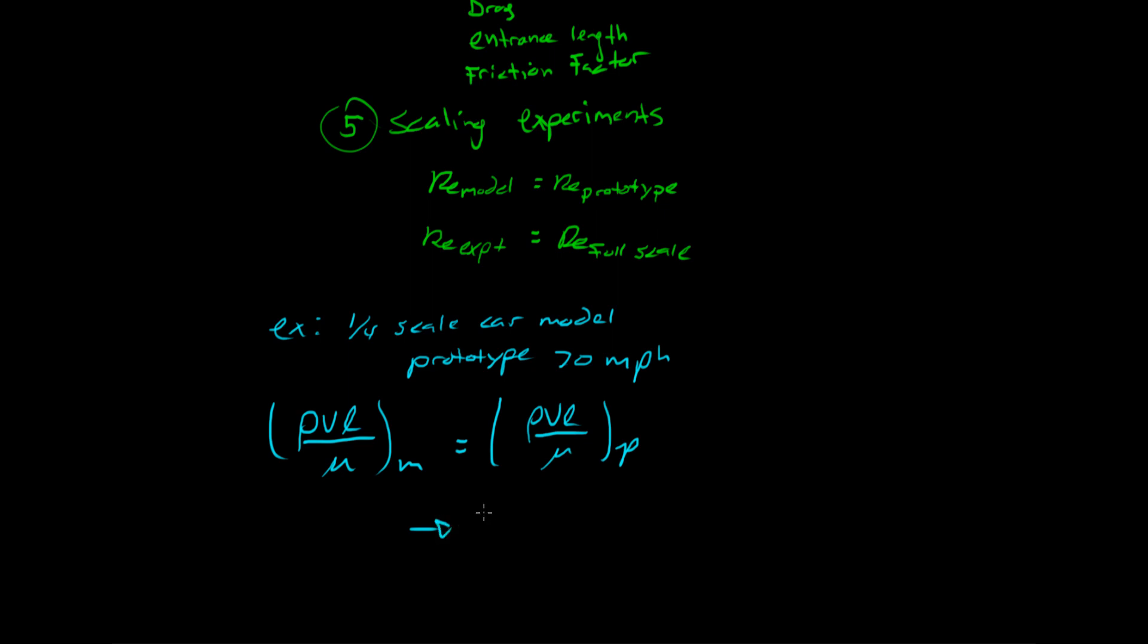And so with a little bit of algebra, we can solve this to see that the velocity of the model has to be equal to the velocity of the prototype times ρ_prototype over ρ_model times characteristic length of the prototype over characteristic length of the model, times viscosity of the model over viscosity of the prototype. Now we were talking about a quarter-scale model, so that means the model is one-fourth the size of the prototype, which means that this is four to one.